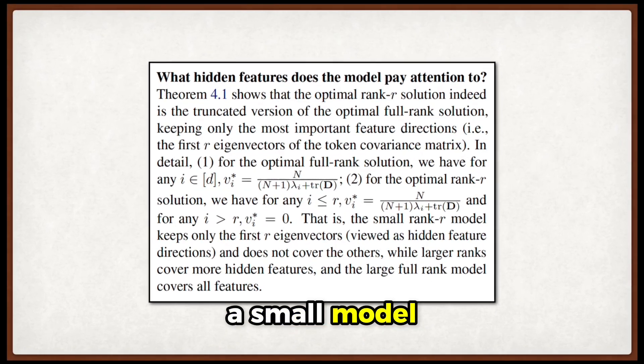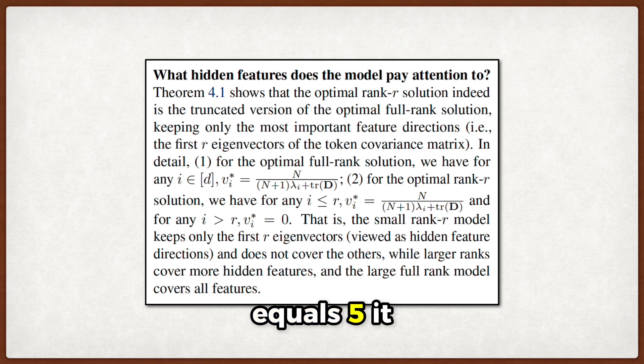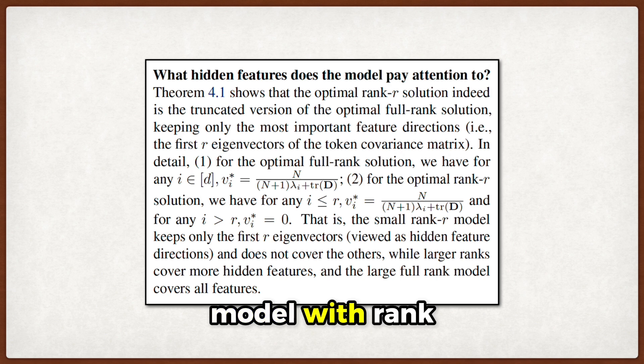This means that if you have a small model with rank R equals 5, it only pays attention to the 5 most important feature directions, while a larger model with rank 50 would try to capture 50 directions, including potentially noisy ones.